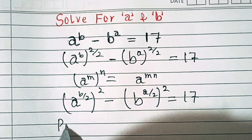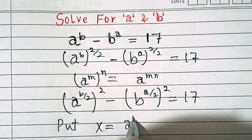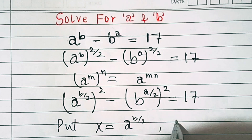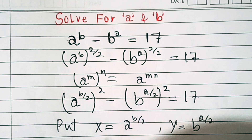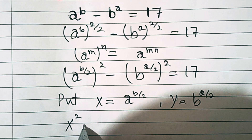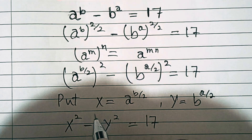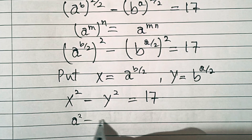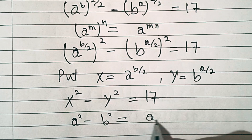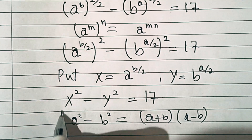Now let's put x equal to a^(b/2) and y equal to b^(a/2). So this equation will become x² minus y² equal to 17. We have changed this equation into the form a² minus b², which equals (a+b)(a-b).